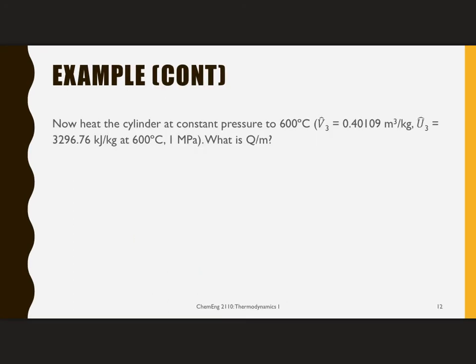Let's now do a second step. I'm going to take this cylinder that is currently full of saturated steam, and I'm going to continue heating it to 600 degrees C. Again, the volume and internal energy are given, but you could have looked this up. Now, we are still doing this at 1 megapascal, so P is still constant.